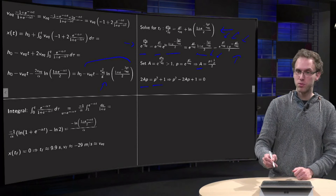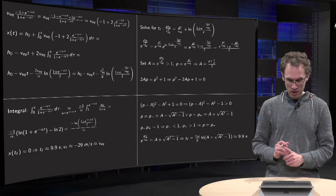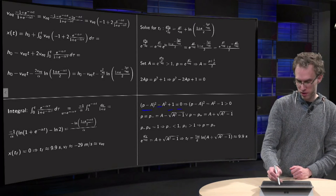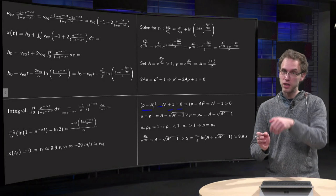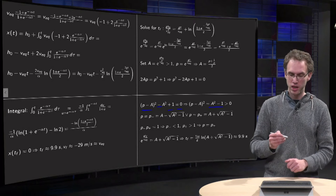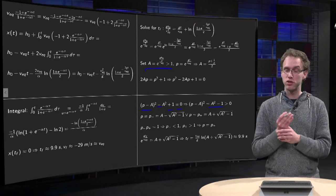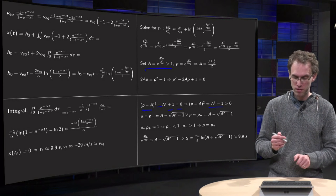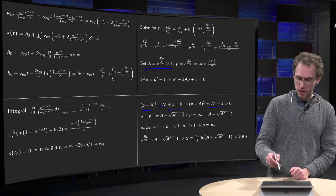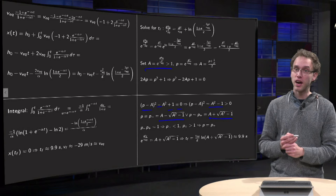You get 2ap equals p squared plus 1, so p squared minus 2ap plus 1 equals 0. You can complete the square: (p minus a)^2 minus a^2 plus 1 equals 0. Putting a^2 and 1 to the right-hand side: (p minus a)^2 equals a^2 minus 1, and since a is bigger than 1 — it is an exponential of some positive number — a^2 minus 1 is positive. So p equals a plus or minus sqrt(a^2 minus 1).